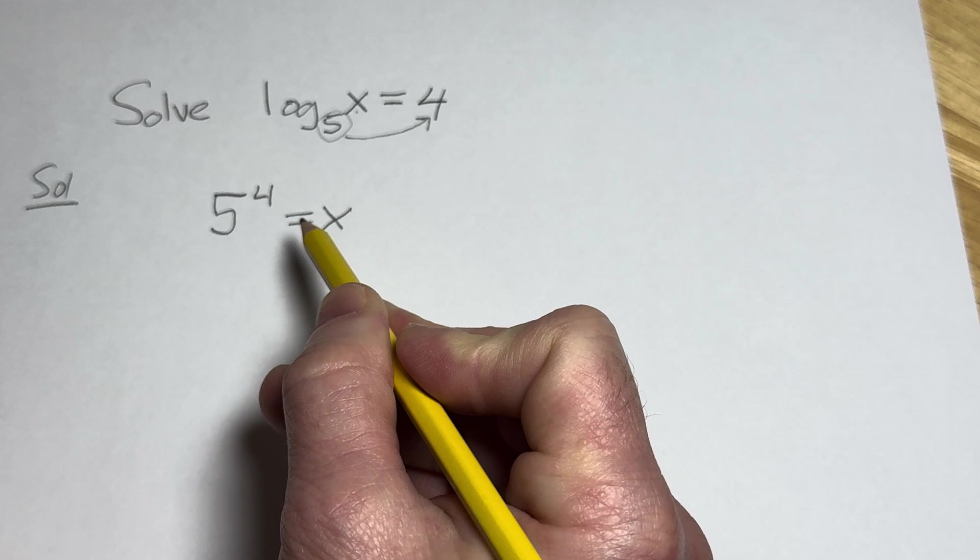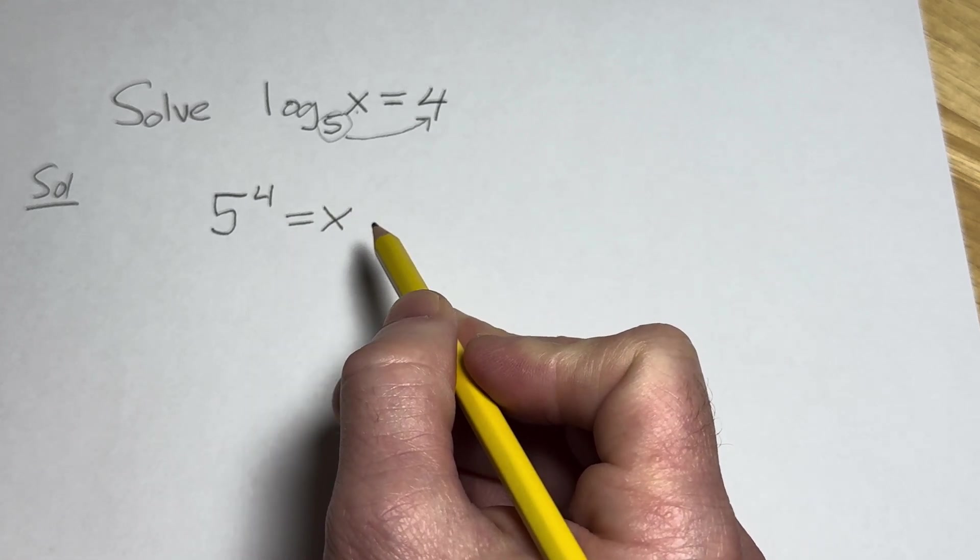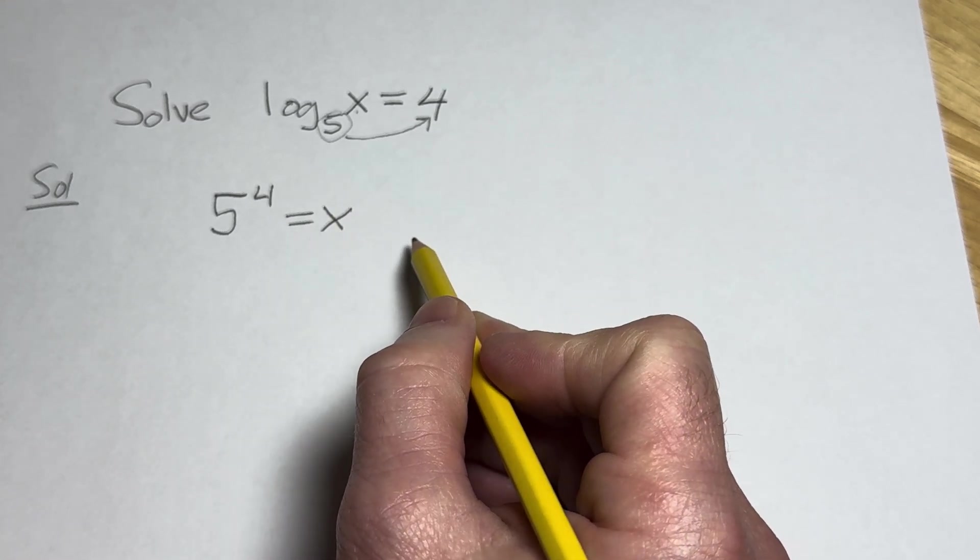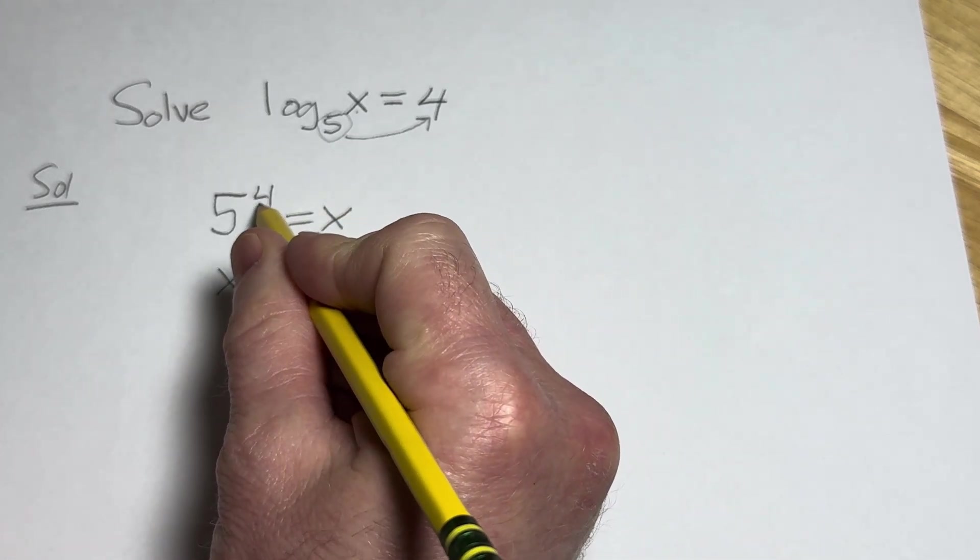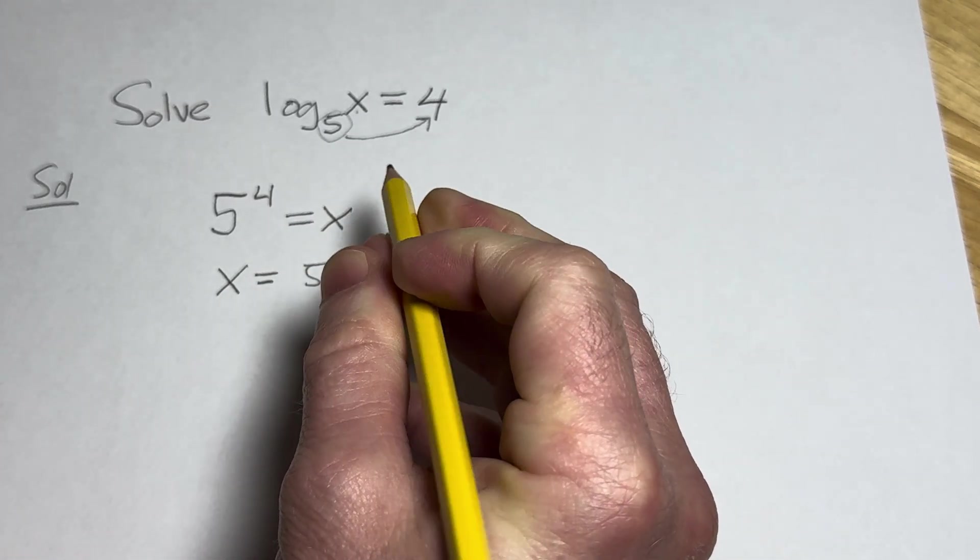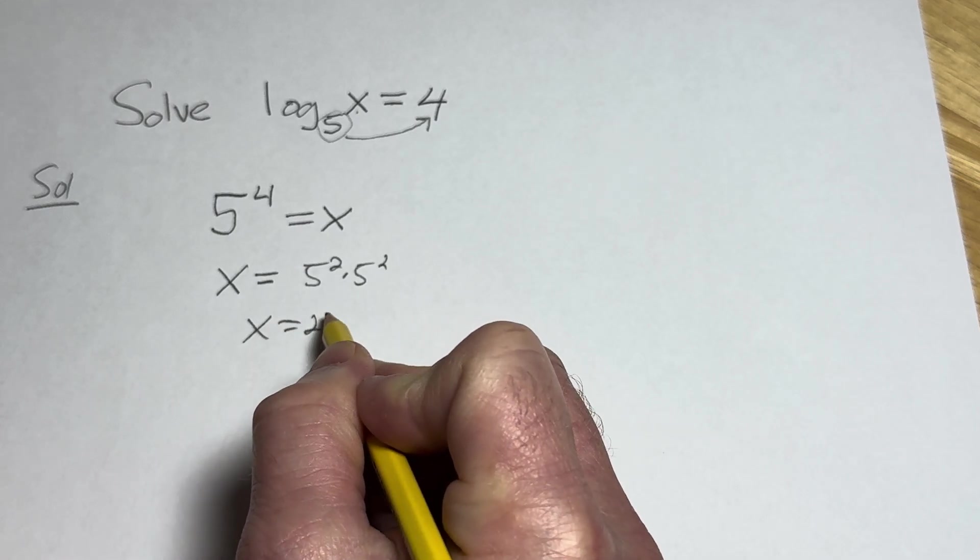You might ask, what is 5 to the 4th power? You could use a calculator or work it out manually. One way to work it out that's pretty easy is to think of it as 5 squared times 5 squared, which is 25 times 25.